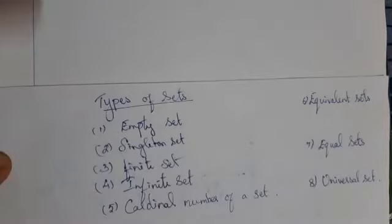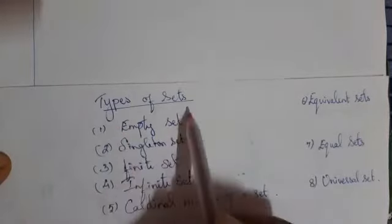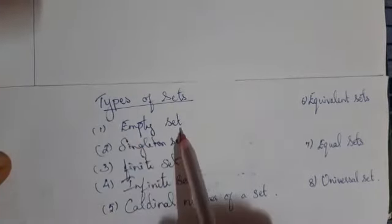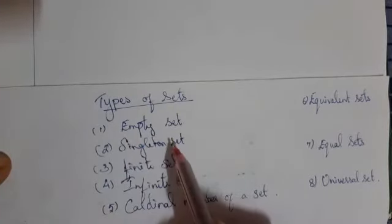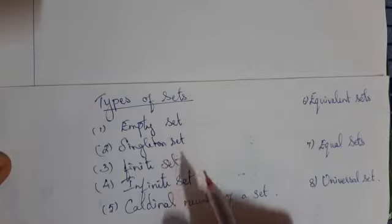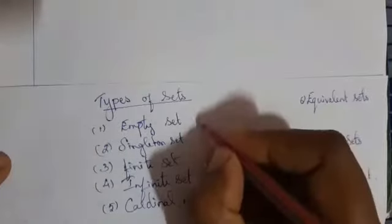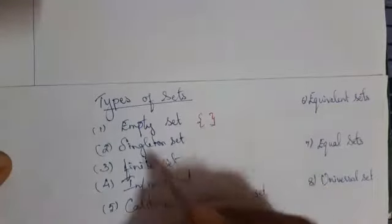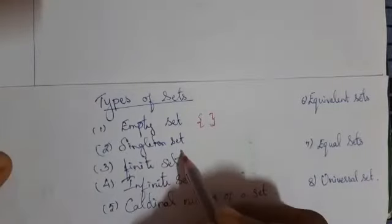Hi students. Shall we recall the types of sets? Empty set — an empty set means a set consisting of no element. Therefore, inside the set it is empty. This is the empty set. What is the meaning for singleton set?